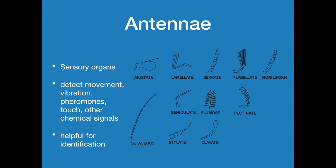Antennae are again the sensory organs that we tend to use for identification. There are lots of different types of antennae. I'm not going to ask you to label pictures of antennae — you should have done that in your classification courses. It's just to give you an idea that there are lots of different types and we use them in classification in particular. As sensory organs they detect movement, vibrations, and pheromones from other insects. Honeybees, for example, release all kinds of different pheromones and chemical signaling as a form of communication between social insects.